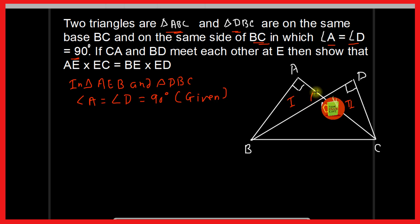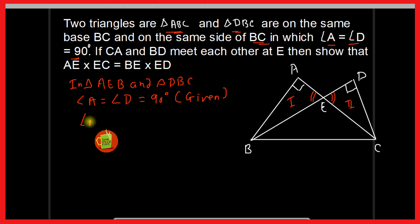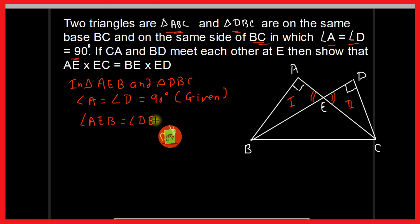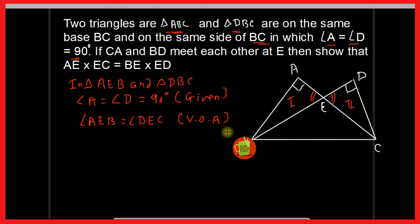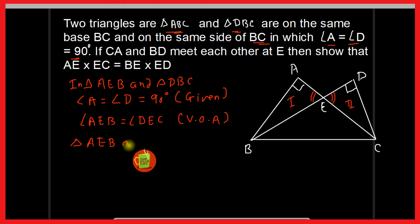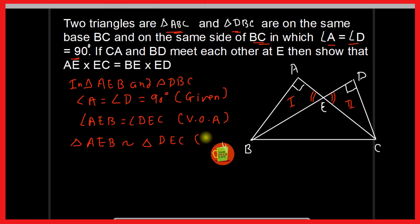Also, angle AEB and angle DEC are vertically opposite angles, so they are equal. Since these two angles are equal, by AA criteria, these two triangles are similar. Therefore, triangle AEB is similar to triangle DEC by AA criteria.